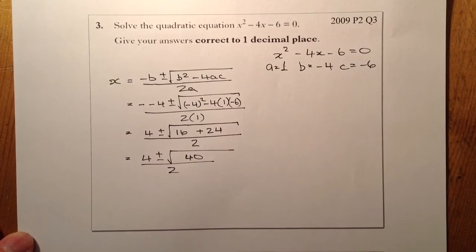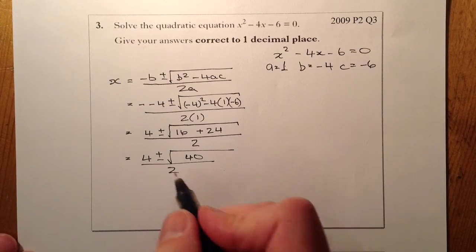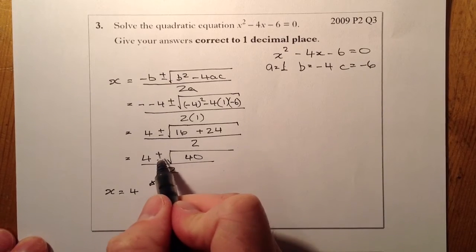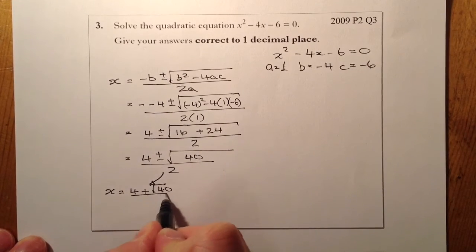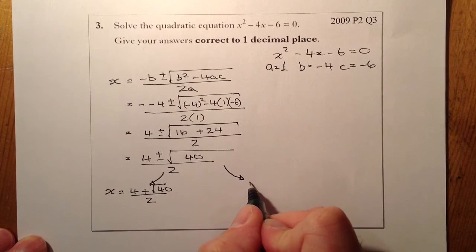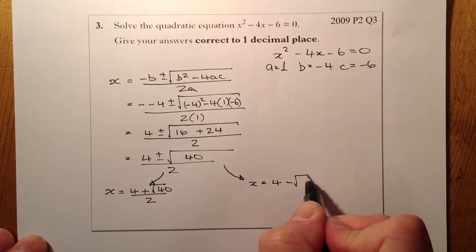From there I'm going to split it into two solutions. The first solution is going to be x equals 4 plus root 40 divided by 2. The other solution is going to be x equals 4 minus root 40 divided by 2.